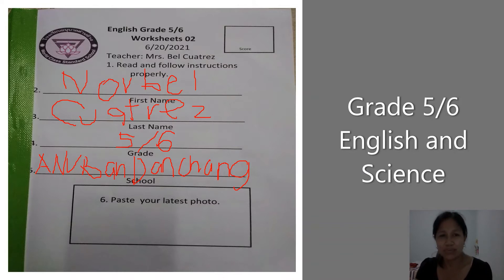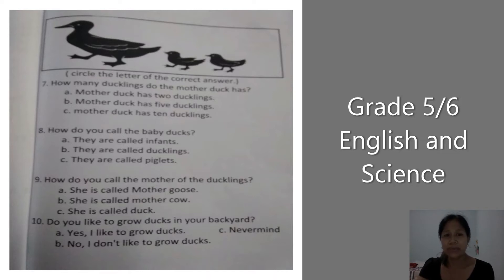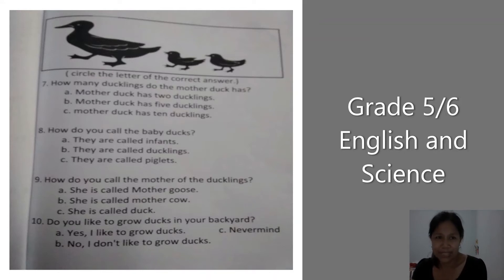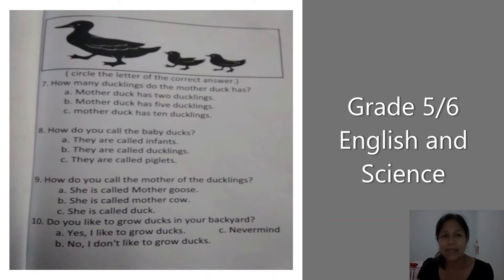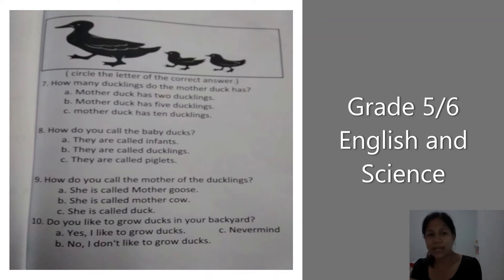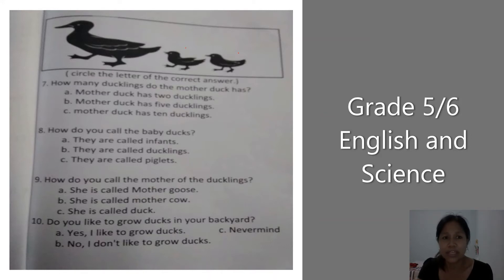Now let's proceed to the next page. You need to look at the drawing. The instruction is: read and circle the letter of the correct answer. For example, number seven: how many ducklings does the mother duck have? A — mother duck has two ducklings, B — five ducklings, C — ten ducklings. Of course there are two ducklings — one, two — so the correct answer is letter A. Circle the letter of the correct answer.